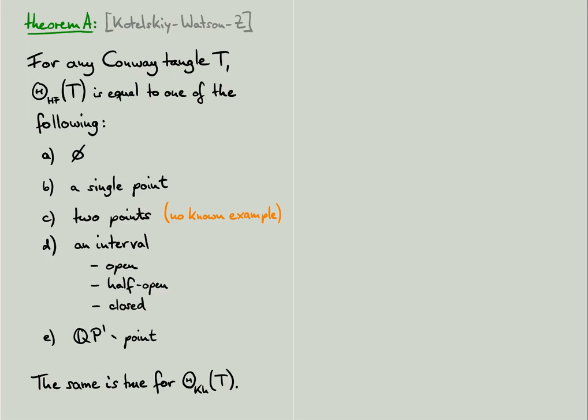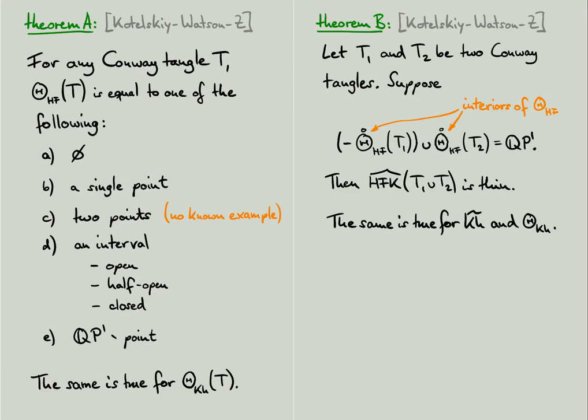We also prove theorem B. This theorem says that given two Conway tangles T1 and T2 for which the interiors of the spaces of thin rational fillings give all of QP1, then the union of T1 and T2 has thin knot-Floer homology. So in other words, once we know theta of T1 and theta of T2, that is, once we know how the tangles behave under rational fillings, then we often know enough to certify thinness of the unions of these two tangles.